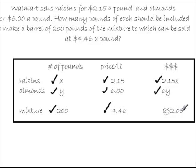It's not in the problem, but really, if I'm making a mixture of 200 pounds and I want to sell them at $4.46 a pound, when I multiply pounds times the price per pound, I get this number, $892.